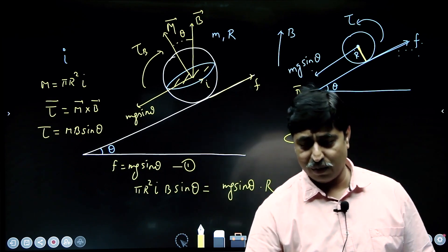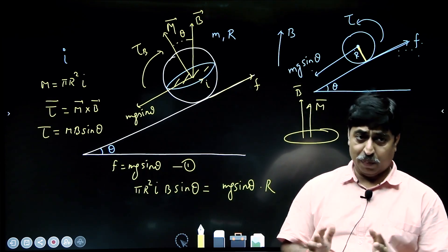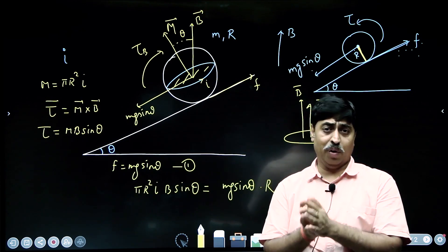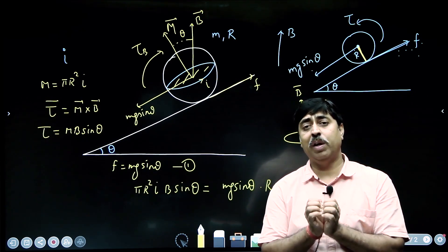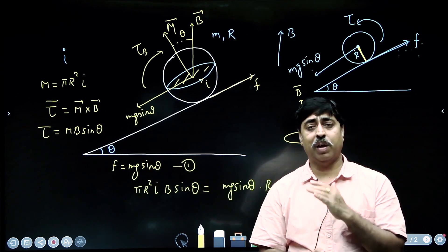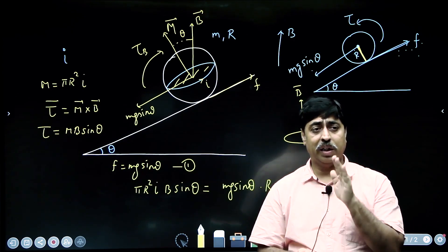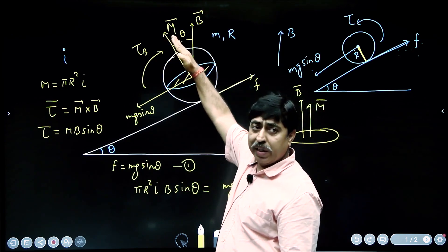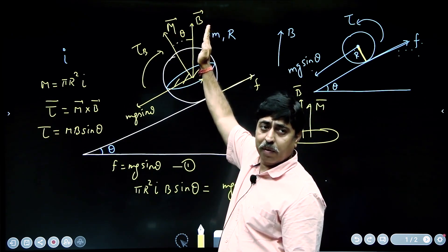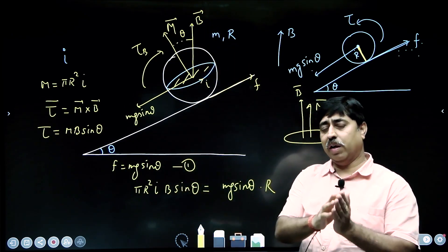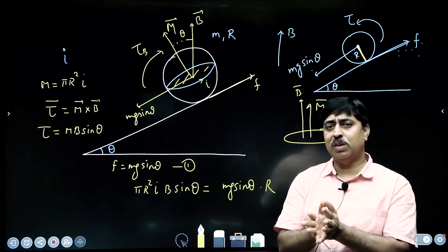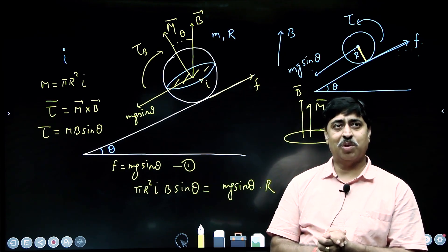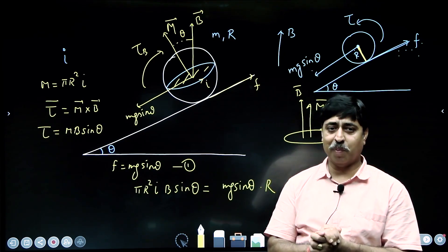I hope all of you have understood this question. The important reminder is: in a uniform magnetic field, a coil will not experience any force, but it will experience a torque, and the direction of the torque is always such that it tries to bring the magnetic dipole moment vector M parallel to vector B. If you understand these two things, you understand this question. See you in the next video — goodbye.